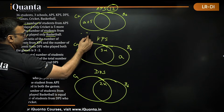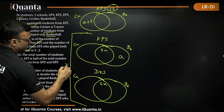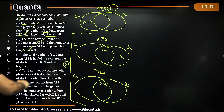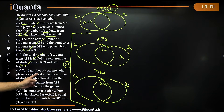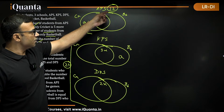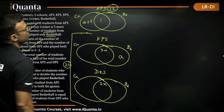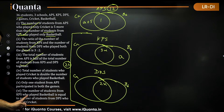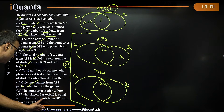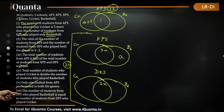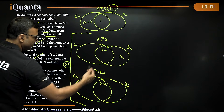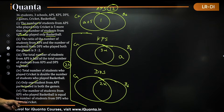Only one student from APS played both games, so APS both is 1. Next, the number of students from KPS who played basketball is equal to the number of students from DPS who played cricket. So KPS basketball equals DPS cricket. We will assign variables to the remaining unknowns to work through these conditions.